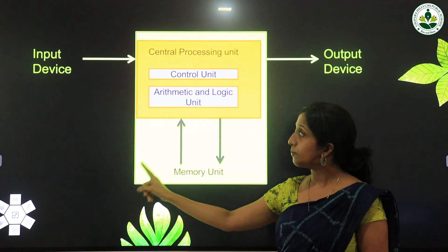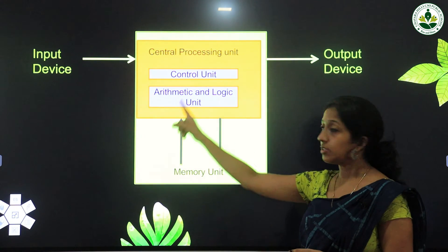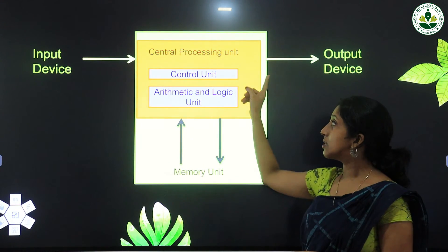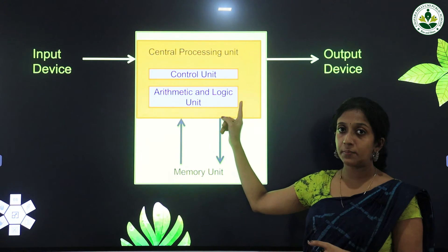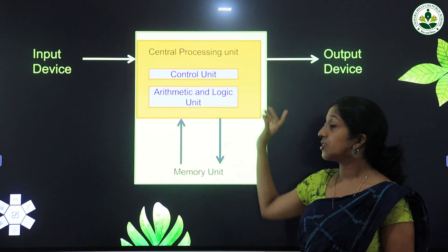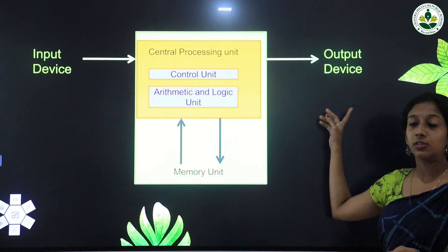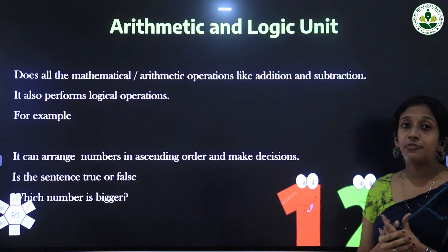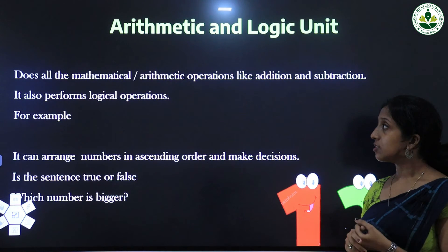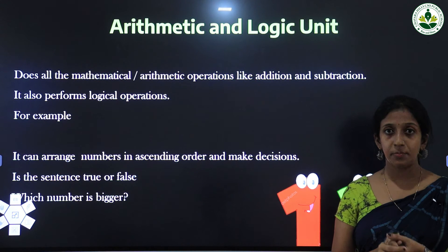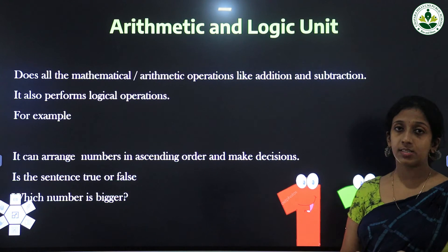The input is given by using an input device to the CPU. The CPU consists of a Control Unit and an ALU — Arithmetic and Logic Unit. After the processing, it gives the output by using an output device.